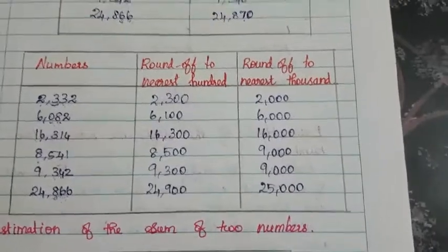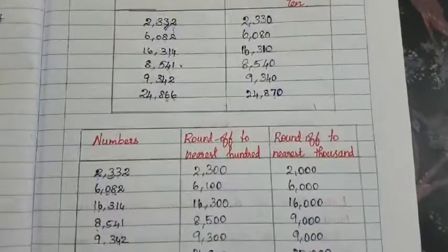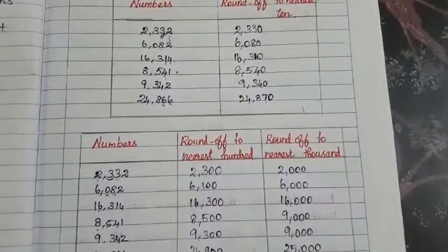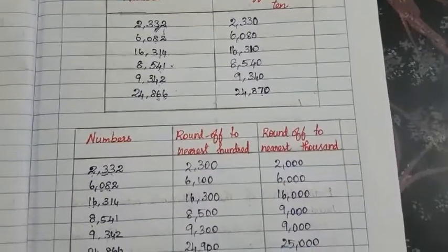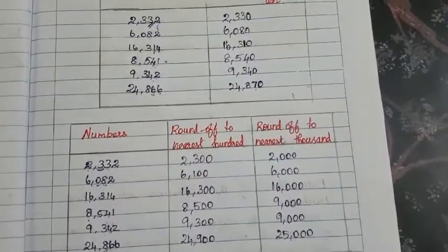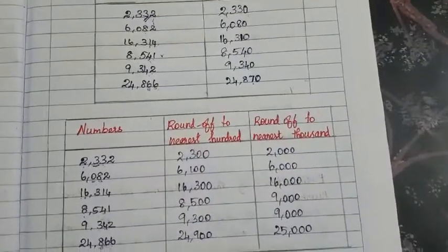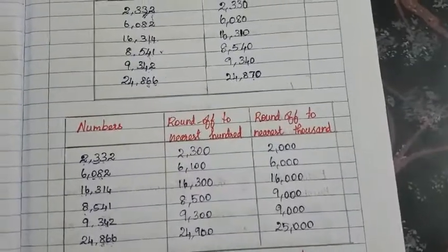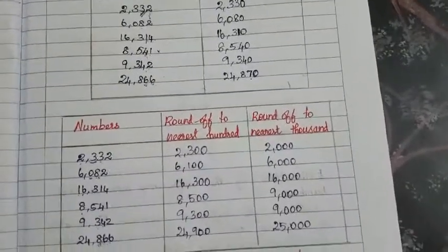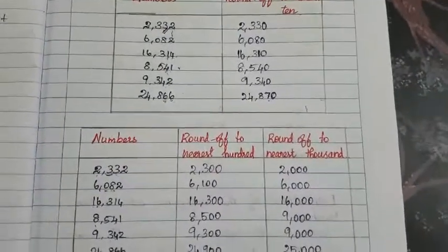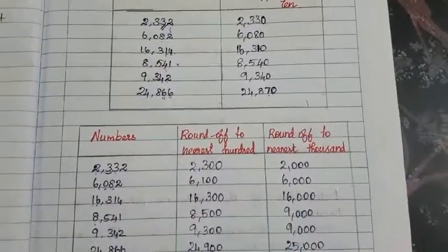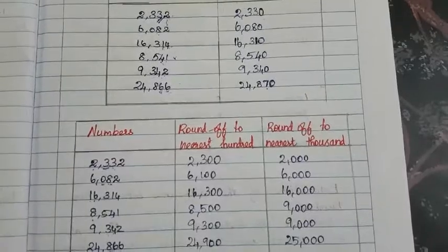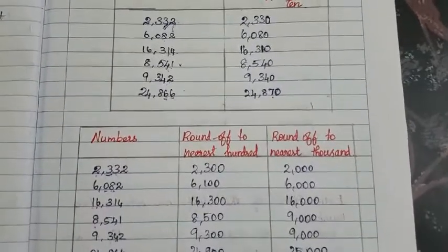In this video, we have learnt the 3 main rules for rounding off numbers, and how to apply those rules to round off numbers to the nearest 10, 100, and 1000. I hope you all understand this. If you have any doubts, please go through the video again — watching more than once will help you understand better. Thanks for watching. Thank you.